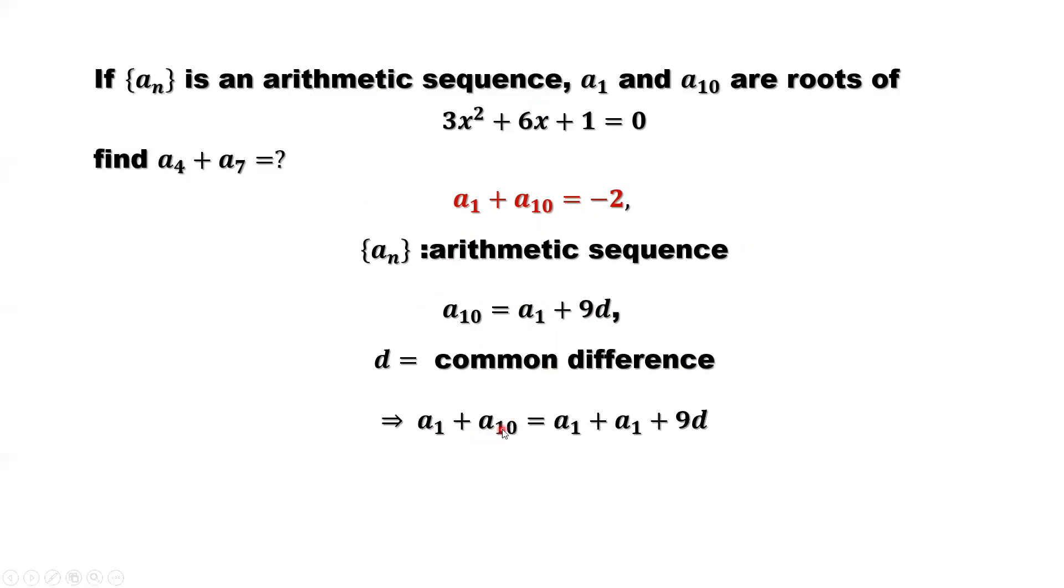A1 plus A10 equals A1 plus, substitute A10 by A1 plus 9D. This implies 2A1, we have 2A1 here, plus 9D equals negative 2.